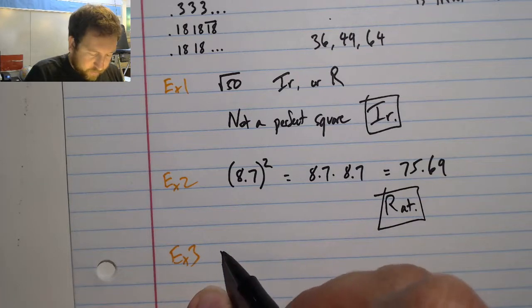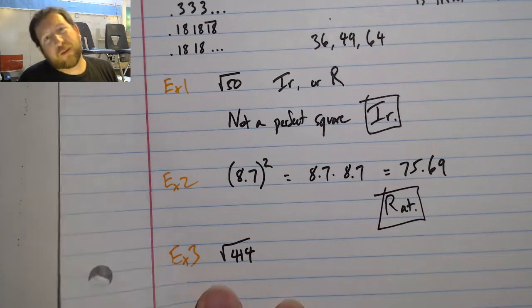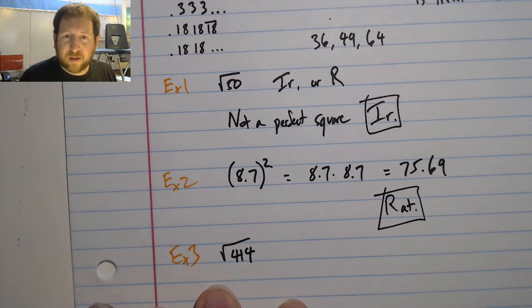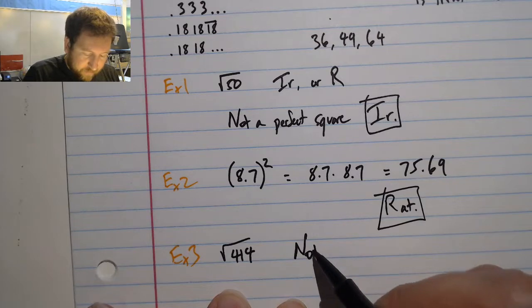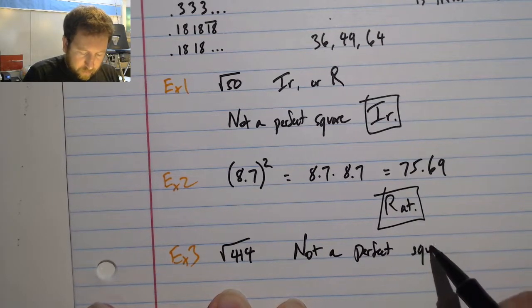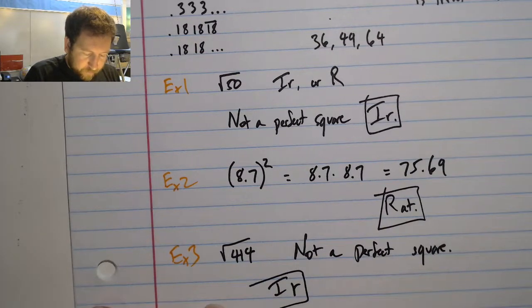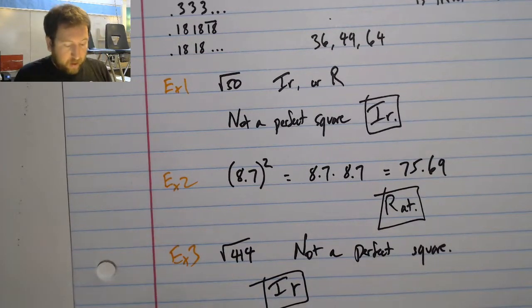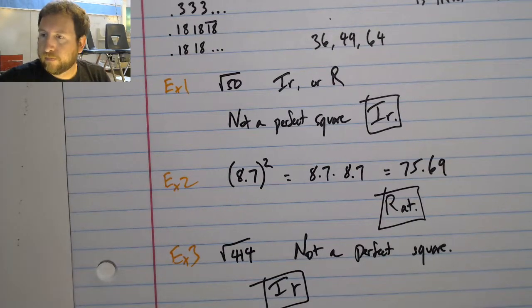Let's take a look at the square root of 414. Well, is this a perfect square? I'm not sure. I can plug this into my calculator and I can test that it is not a perfect square, so it is irrational. There you go, not too bad. Good luck with this section!